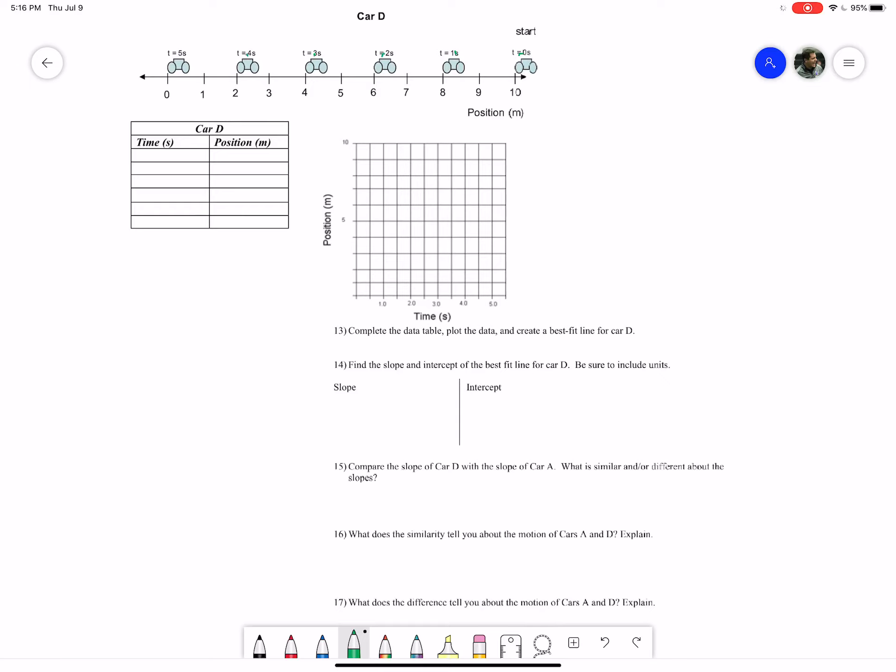We have time zero seconds, the position is actually 10 meters. Time of one second, the position is eight meters. Two seconds is going to be six meters. Three seconds, four meters. Four seconds is going to be two meters. And five seconds is going to be zero meters.